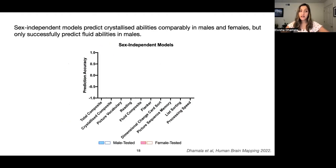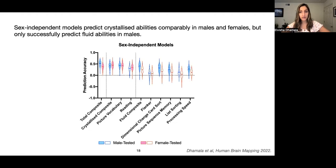First, we looked at the extent to which sex-independent models — trained on both sexes — were able to predict the cognitive composite scores and individual task scores. Here we have the different cognitive scores along the x-axis and their prediction accuracy, the correlation between true and predicted scores, on the y-axis. We're showing results from models tested on males in blue and tested on females in pink, with colored violin plots indicating better-than-chance performance. Overall, we found that total composite cognition and crystallized scores are equally predictable in males and females, but fluid abilities are only accurately predicted in males and not in females.